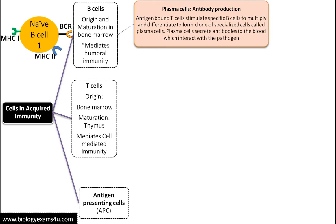B cells are responsible for antibody protection. A B cell has a B cell receptor which is specific to an epitope or antigenic peptide. It has both MHC class 1 and MHC class 2 receptors. MHC class 1 is present on all nucleated cells, whereas MHC class 2 is the specific receptor present on antigen presenting cells. Therefore, B cells can also act as antigen presenting cells.